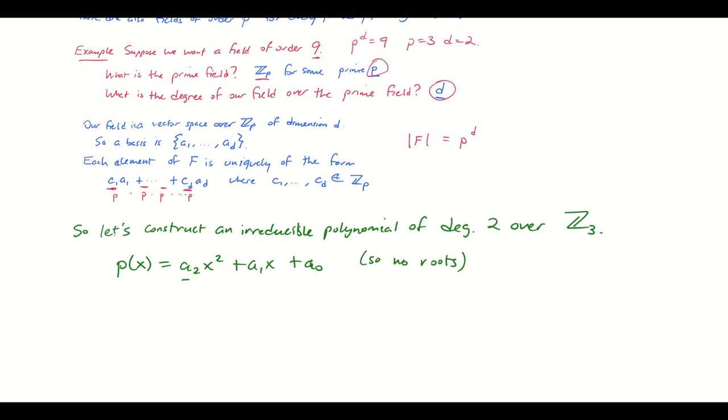And I can always pick a2 to be 1 because if I have an irreducible polynomial of degree 2 at all, I can rescale it so that it's monic. So let's just take that choice out of the system of complications here.